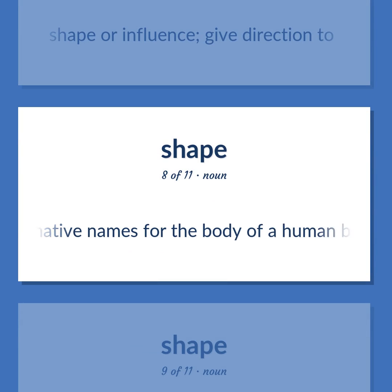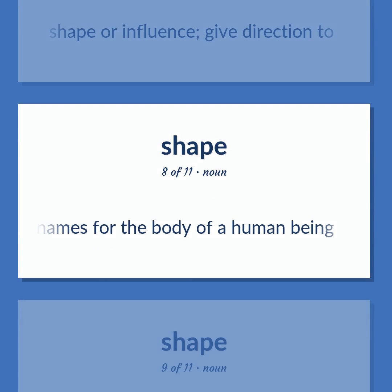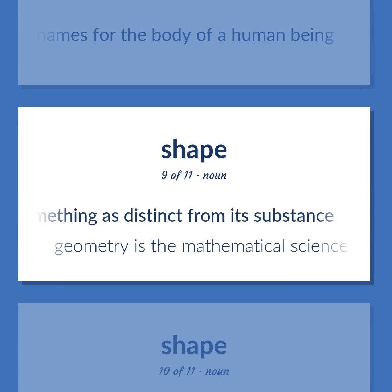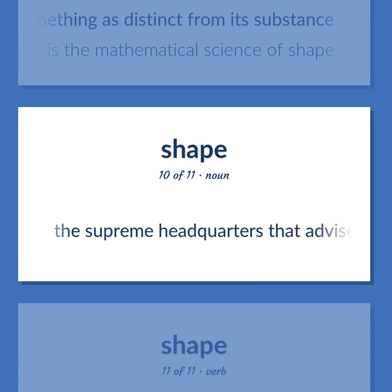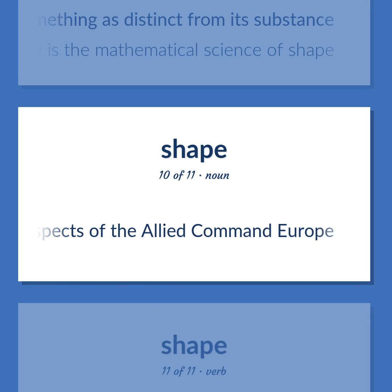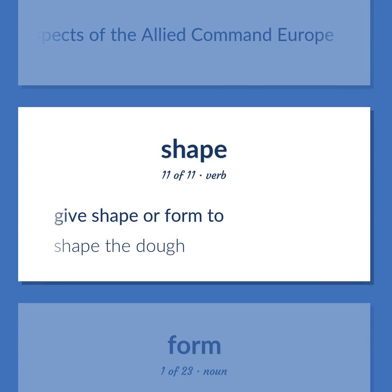Shape (continued): Alternative names for the body of a human being. The spatial arrangement of something as distinct from its substance. Example: Geometry is the mathematical science of shape. SHAPE: The Supreme Headquarters that advises NATO on military matters and oversees all aspects of the Allied Command Europe. Give shape or form to. Example: Shape the dough.